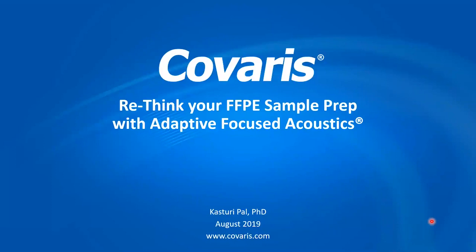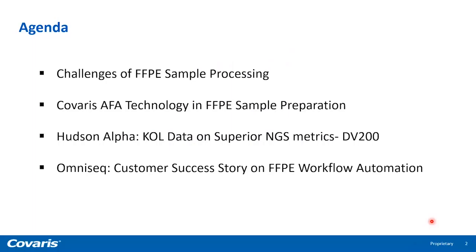With AFA, we enable detection of gene fusions that were undetectable with other kits and lower quantity not sufficient, or QNS, rates significantly. In today's agenda, we will briefly mention why FFPE samples are challenging to process, how Covaris's AFA technology offers a superior solution for FFPE sample preparation, present KOL data to support Covaris's claims for high-quality NGS-grade nucleic acid extraction, and then close with sharing a key customer success story from Omnisic on Covaris's FFPE workflow automation and high-throughput solutions.